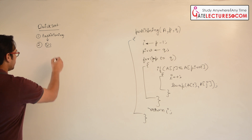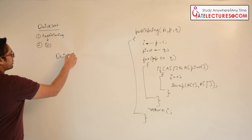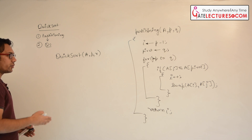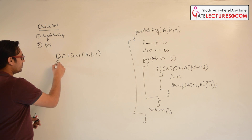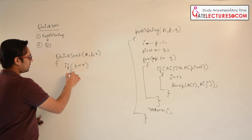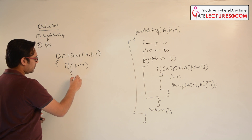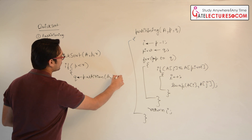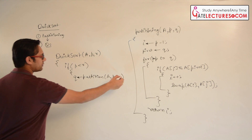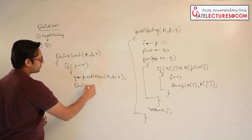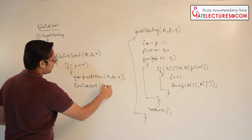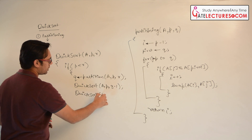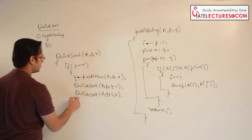What is a quick sort procedure? We write quick sort and assume we have the index locations a, p, and r, where p is the starting index and r is the ending index. If p is less than r, then we do q equals partition(a, p, r), and then we recursively call quick sort(a, p, q minus 1) and quick sort(a, q plus 1, r).